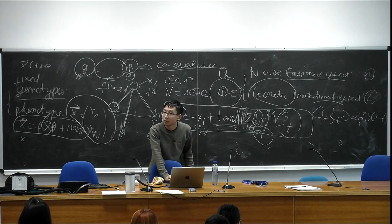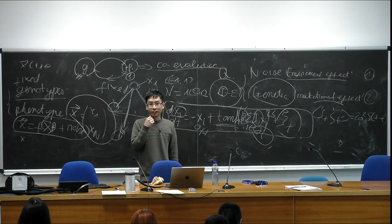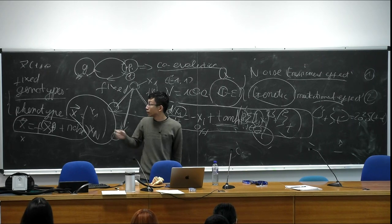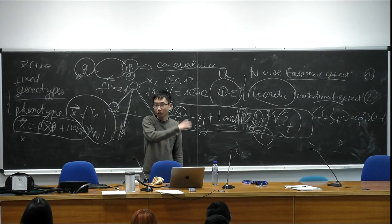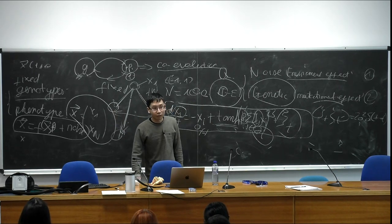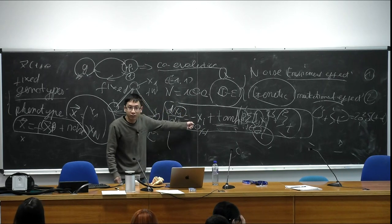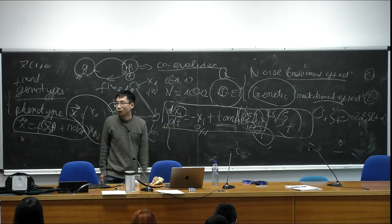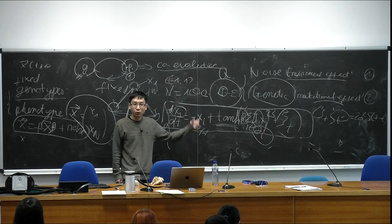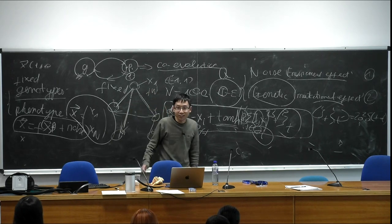A comment: if J_ij exists as a quenched random variable — meaning the coupling constant is fixed over time and does not change during the course of gene evolution — then there is a theoretical framework called Dynamical Mean Field Theory (DMFT) which has been developed to make analytical statements about this equation. For those interested, check papers by Sompolinski or more recent reviews by John Head or Tom Cullen.